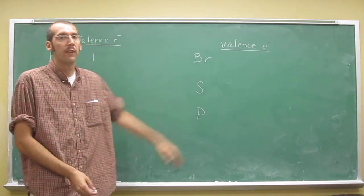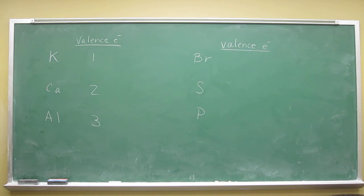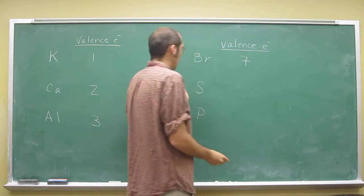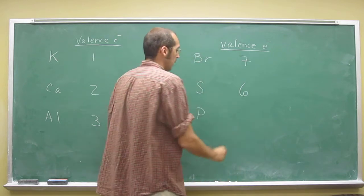So remember we want to have a full octet, or have no valence electrons, or eight valence electrons, whichever way you want to look at it. So bromine has got seven. Sulfur has six, and phosphorus has five.